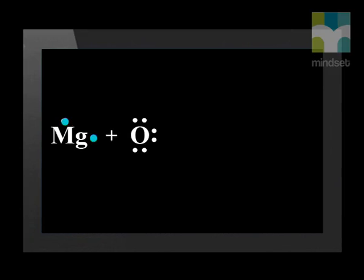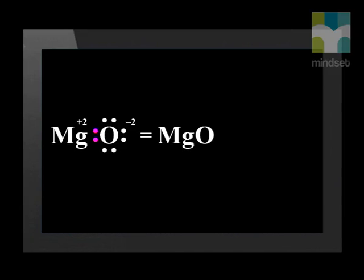We see that magnesium has two valence electrons and oxygen has six. When magnesium reacts with oxygen, it loses two electrons and transfers them to the oxygen atom. When the two electrons are lost, magnesium becomes more positive and becomes magnesium 2+, while the oxygen atom gains the two electrons and becomes more negative, changing to oxygen 2-.